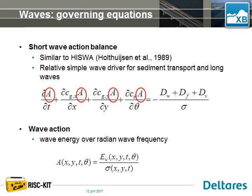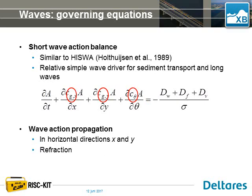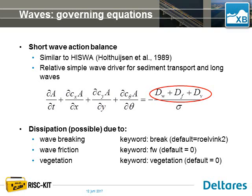First, we have the wave action A, defined as the wave energy over the radiant wave frequency, which is useful for applications with wave-current interaction. We also have the wave group velocity used to propagate wave energy or wave action in the horizontal X and Y directions, and the refraction velocity C-theta which leads to the change in wave angle. Finally, in the equation we have dissipation terms due to wave breaking (Dw), friction at the bed (Df), and energy loss to vegetation (Dv).